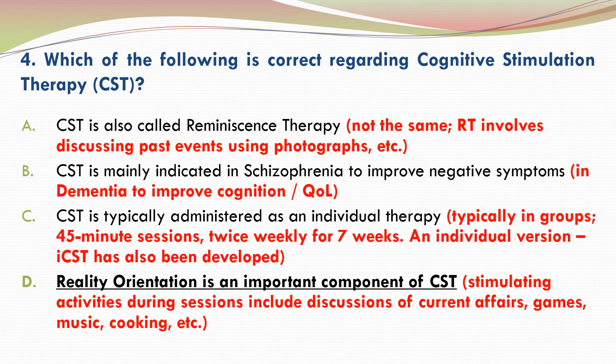C is incorrect because CST is typically administered in groups. A standard CST course consists of 14 sessions of 45 minutes each, spread over 7 weeks at a frequency of 2 sessions per week. An individual version of CST called iCST has also been developed, but it is used only rarely.